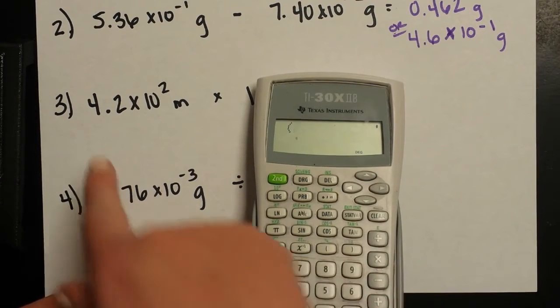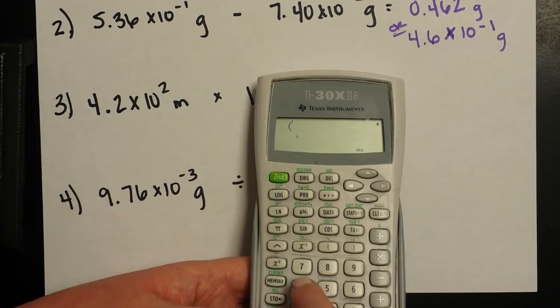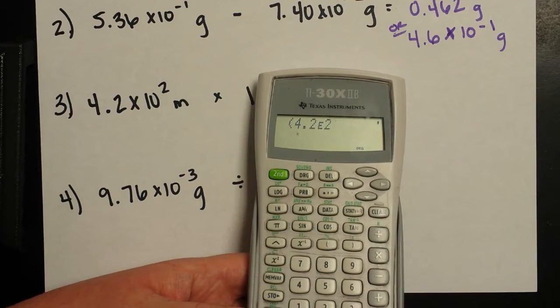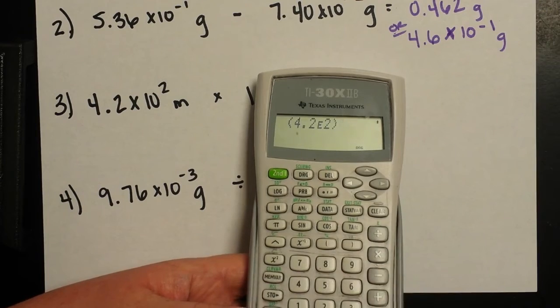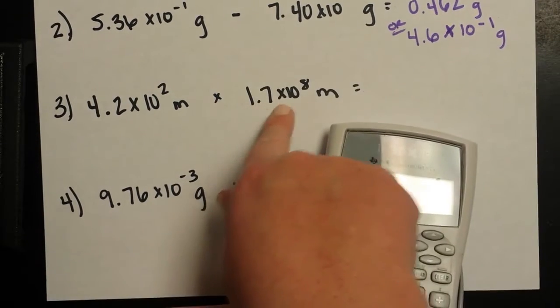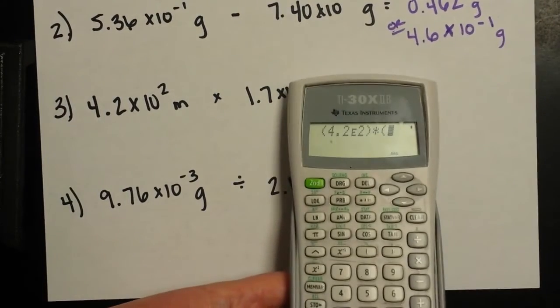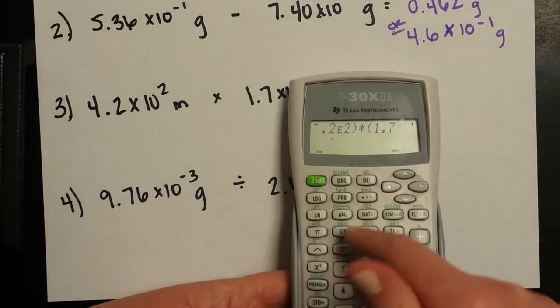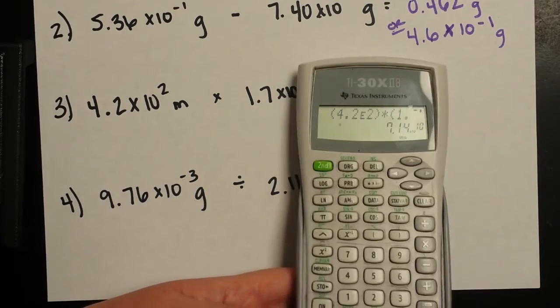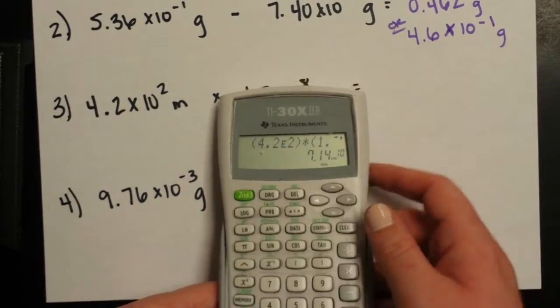So I've got a new number. I'm going to start some parentheses. Coefficient is 4.2 times 10 to the positive 2 exponent. Multiplied by 1.7 times 10 to the 8th. So my coefficient is 1.7 times 10 to the 8th.